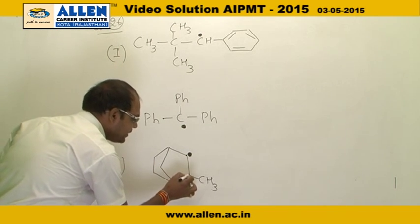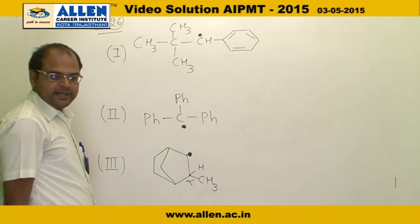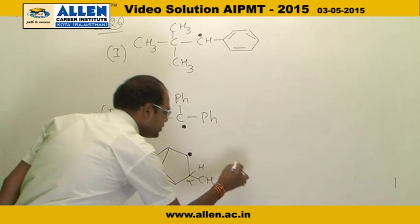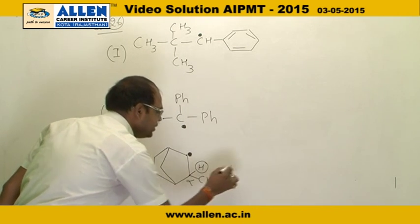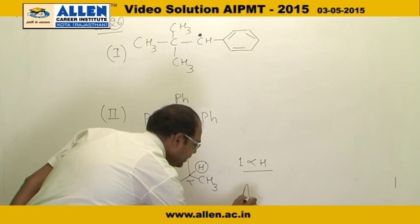But in structure three, there is a radical and the radical's attached carbon is alpha carbon, and hydrogen attached to alpha carbon is called alpha hydrogen. So structure three shows hyperconjugation. There is one alpha hydrogen, so the answer is structure three only.